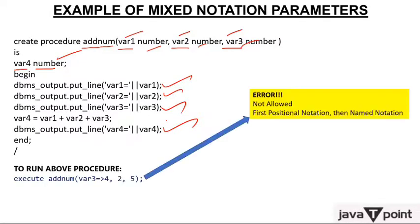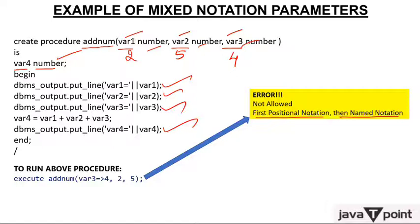To run the procedure, if we do this — variable3 has value 4, then 2 and 5 — what do you think? This is an error. It is not allowed to use named notation first and then positional notation. I had given you homework to identify what is the illegal method, and this is exactly that same line — whenever you are using mixed notation and you are using both named and positional notation.